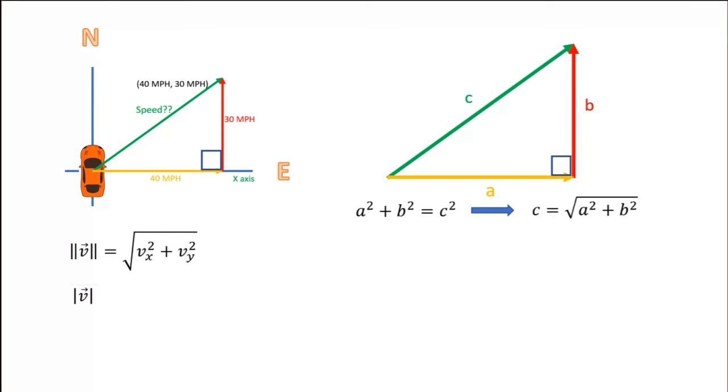And sometimes, even that is too much effort for some people. So you'll see a vector magnitude written like this, without an arrow over it and not in bold font, to indicate that it is the magnitude of the vector v.